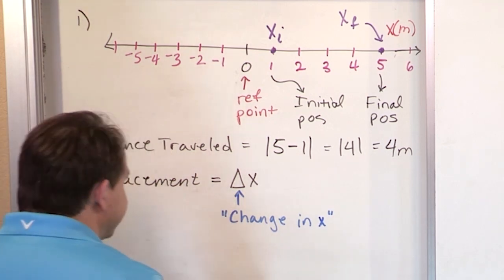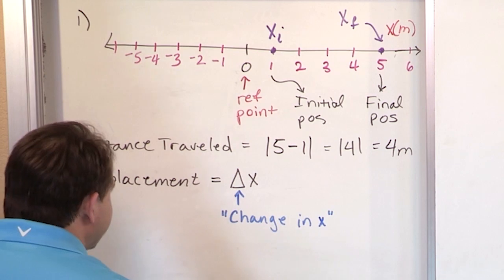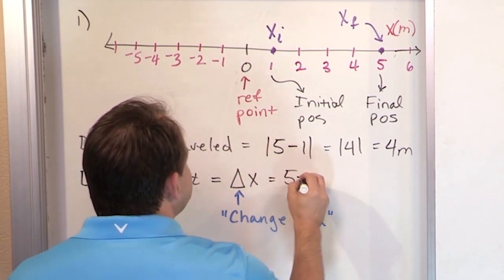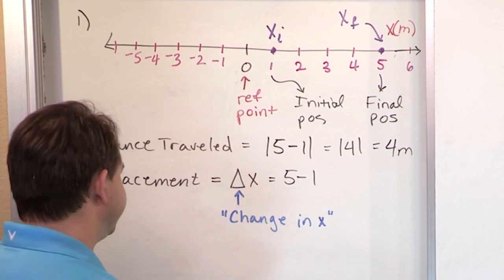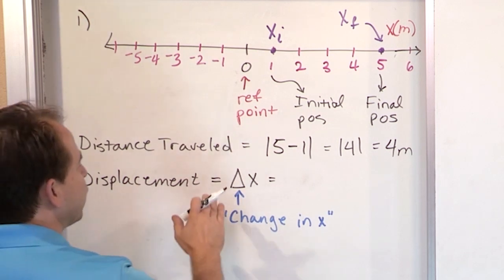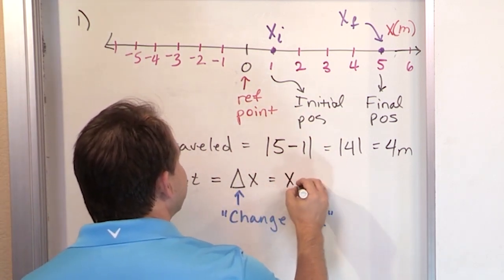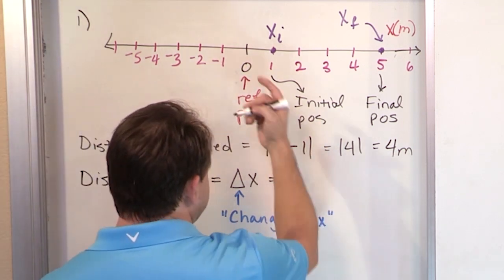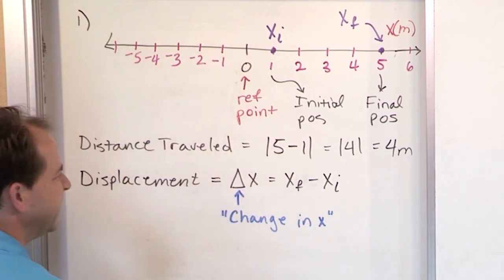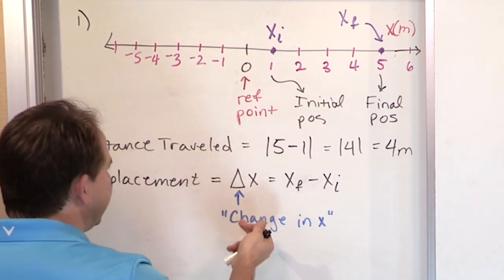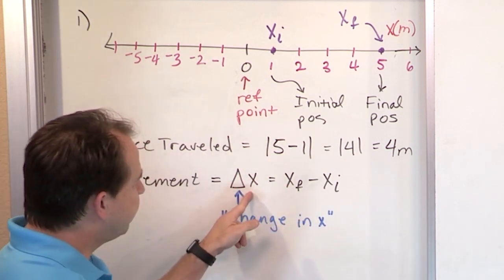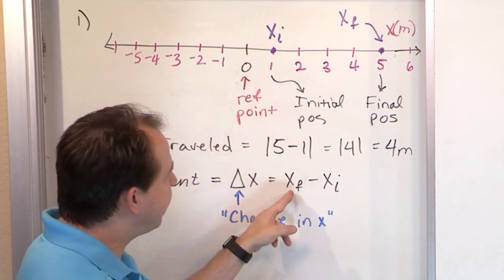So this quantity means change in X, because that's what follows it. How do we find change in X? It's the final value, five, minus the initial value of one — pretty much what we did up here, but without absolute value signs. In general, Delta X equals the final value of your distance from the origin minus your initial value. So you need to get used to the idea that when you see Delta something — Delta velocity, Delta X, Delta energy, Delta temperature, Delta magnetic field — whatever it is means change in that quantity.